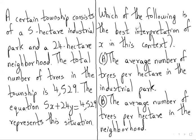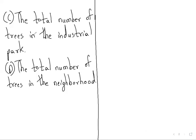Which of the following is the best interpretation of x in this context? Option A: the average number of trees per hectare in the industrial park. Option B: the average number of trees per hectare in the neighbourhood. Option C: the total number of trees in the industrial park. Option D: the total number of trees in the neighbourhood.